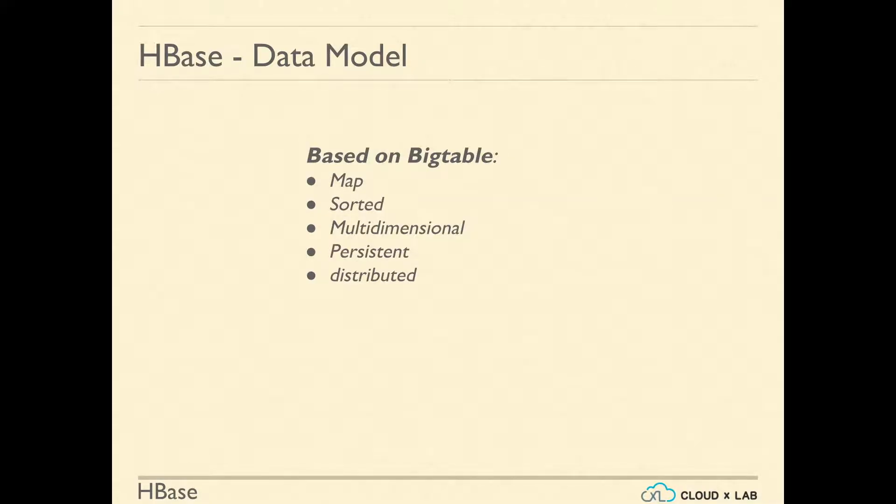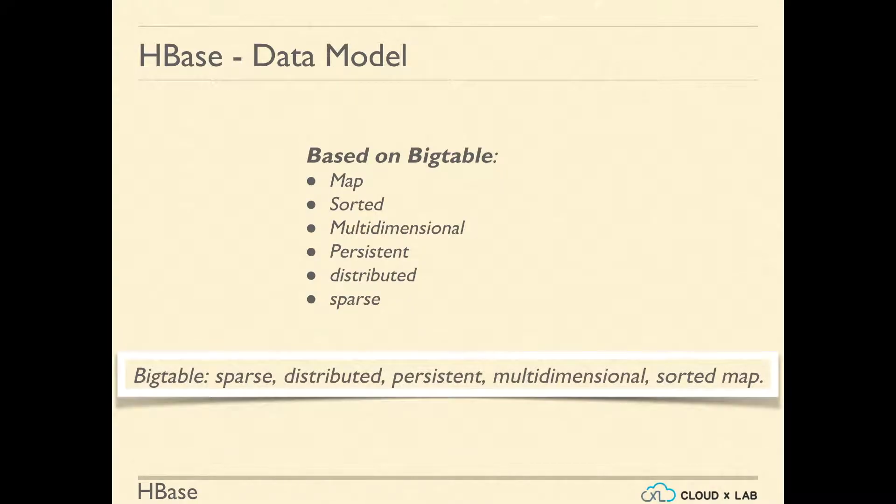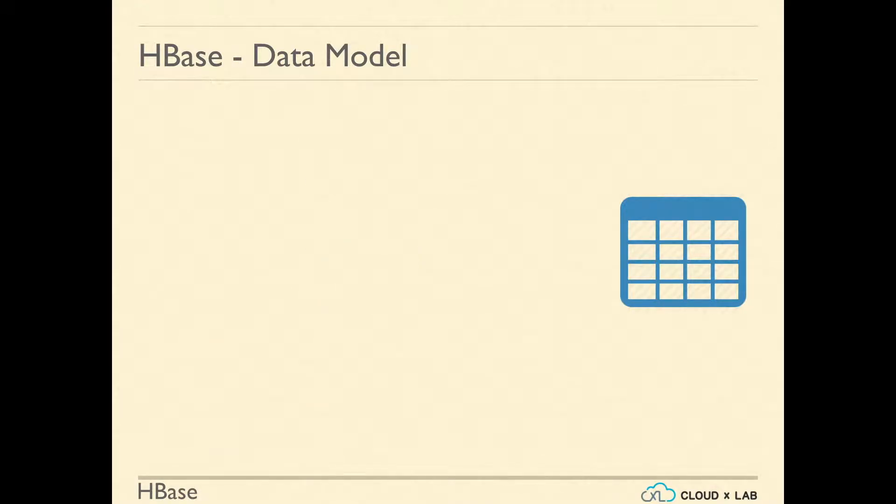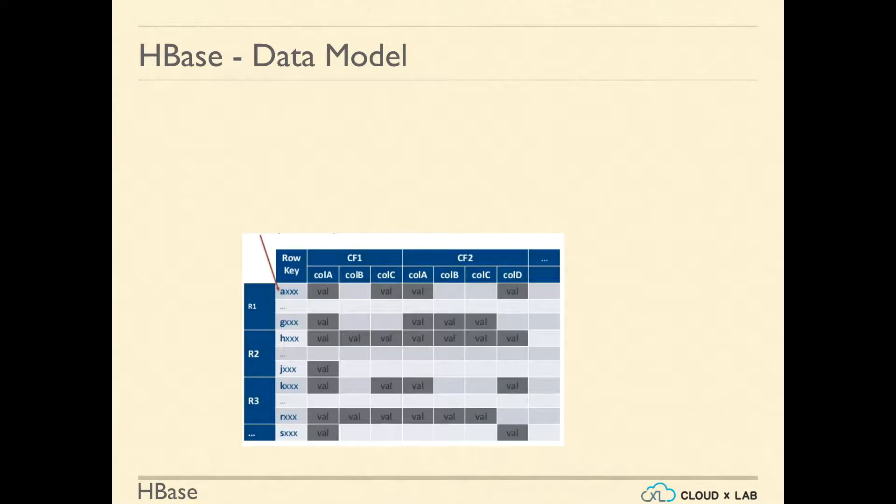The dimensions or columns defined for one key can be entirely different from the values of another key. Let us understand the basic building blocks of the data model in HBase. An HBase table. HBase organizes data into tables. The table names are strings that are safe for file system paths.